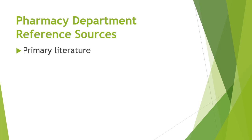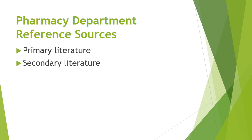Pharmacy literature is divided into three types. One is primary, two is secondary, and the third one is tertiary. The primary literature includes original reports of clinical trials published in professional journals. Secondary literature consists of reference works and search engines. Tertiary literature encompasses textbooks based on primary literature.